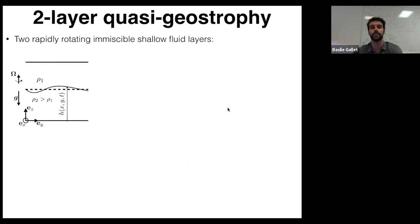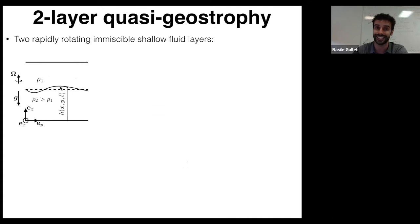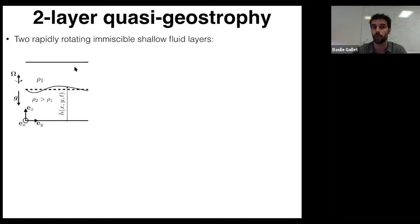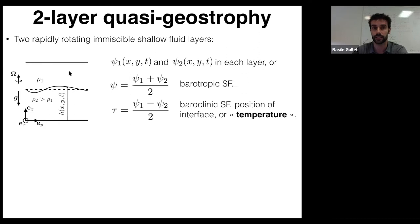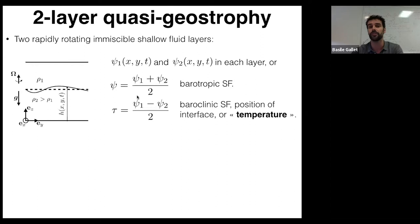The two-layer quasi-geostrophic model consists of two layers of immiscible fluids treated in the shallow water approximation, where the velocity field inside each layer is independent of the vertical coordinate. These layers are rapidly rotating around the vertical axis and subject to gravity, with heavier — cooler — fluid in the bottom layer and warmer fluid on top. You can describe the system using two stream functions, Psi1 and Psi2, or equivalently a barotropic stream function Psi — the average — which is invariant in the vertical and contains most of the kinetic energy.